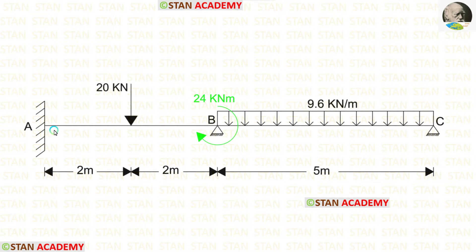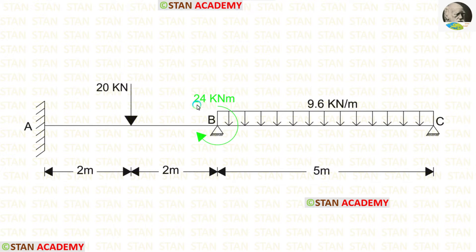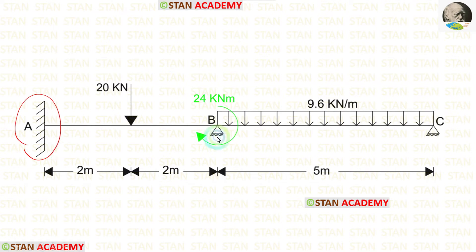In this beam there are two spans: span AB and span BC. In span AB there is a point load of 20 kilo Newton acting at the center. In span BC there is a uniformly distributed load of 9.6 kilo Newton per meter acting for the full span. At support B we have a couple moment of 24 kilo Newton meter acting in the clockwise direction. Length of AB is 4 meters and length of BC is 5 meters. At point A we have a fixed support, and at points B and C we have hinged supports.